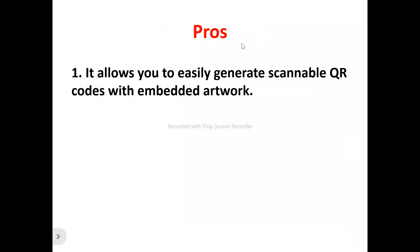Number one: it allows you to easily generate scannable QR codes with embedded artwork. Quick QR Ads allows you to create visually eye-catching, scannable QR codes with your artwork embedded. It allows you to easily produce a visually appealing and engaging QR experience. For example, if you are in the food industry, you can add a burger or any type of food image to speak your brand.